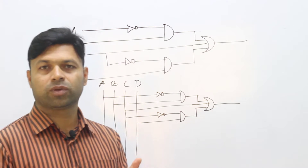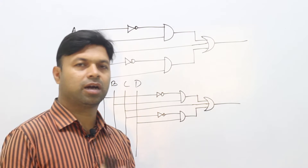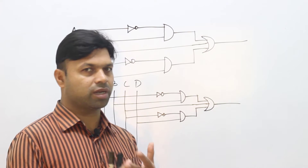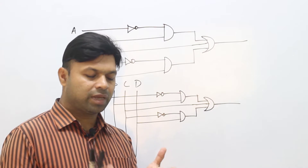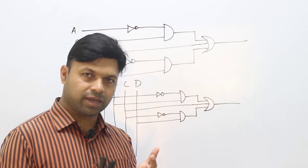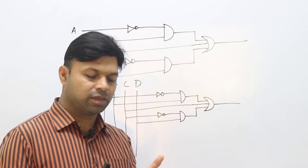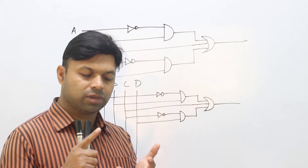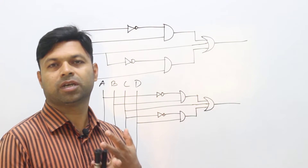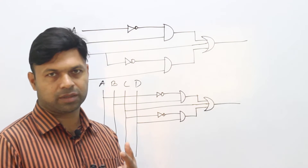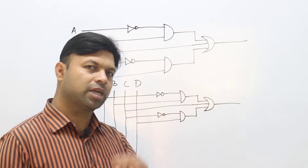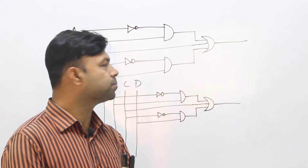The basic gate types include: AND gate, OR gate, NOR gate, XOR gate, and XNOR gate.